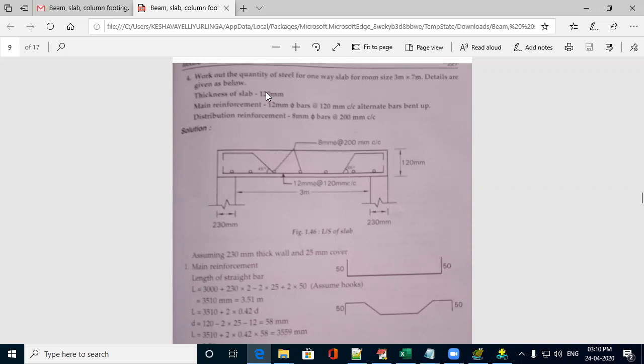They have given the thickness of the slab as 120mm. Main reinforcement 12mm bars at 120mm center to center. Alternate bars are bent up. Distribution reinforcement 8mm bars at 200mm center to center. This is the given detail.